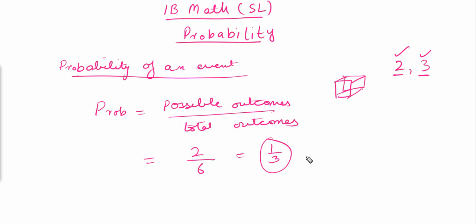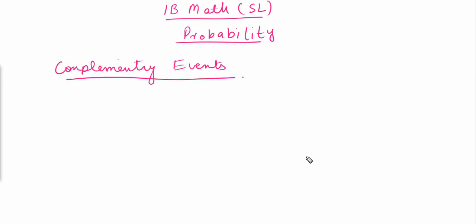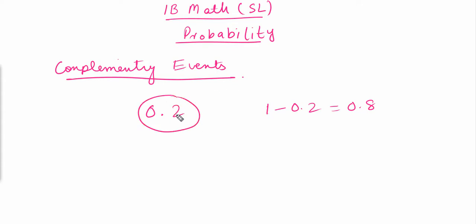Now let's look at complementary events. Complementary events are basically opposite events. For example, if the probability that it will rain today is 0.2, then the probability that it will not rain today will be equal to 1 minus 0.2, which equals 0.8. The sum of all probabilities in an event will always equal 1. This is the probability of rain, and this is the probability of not rain.